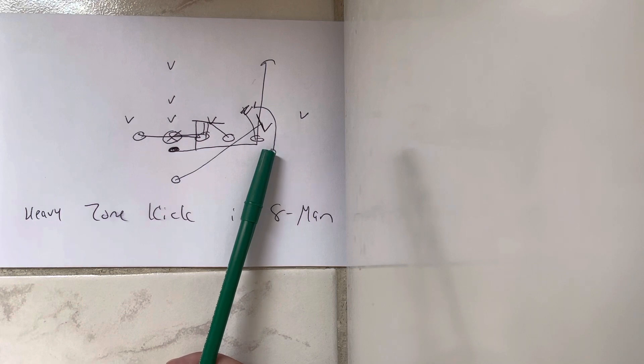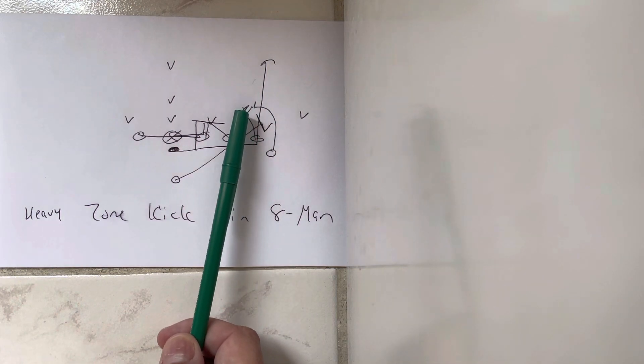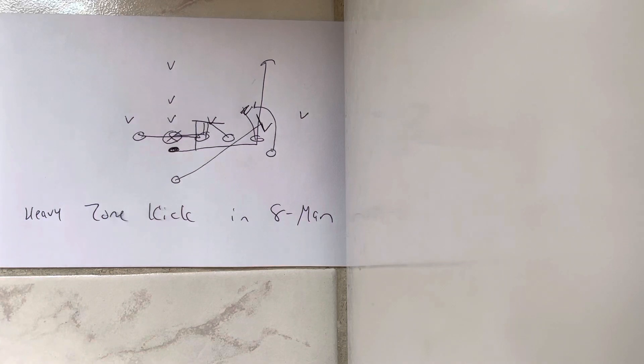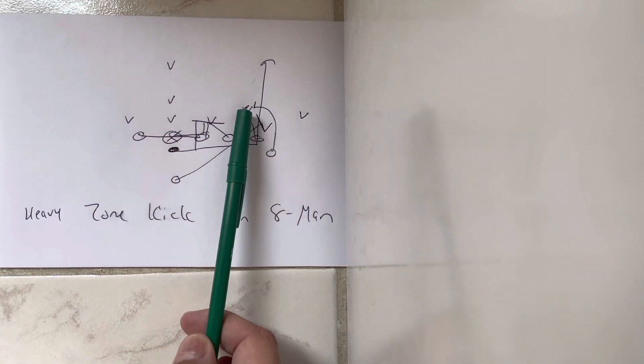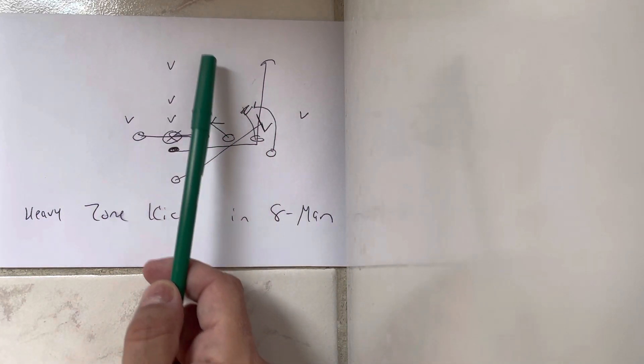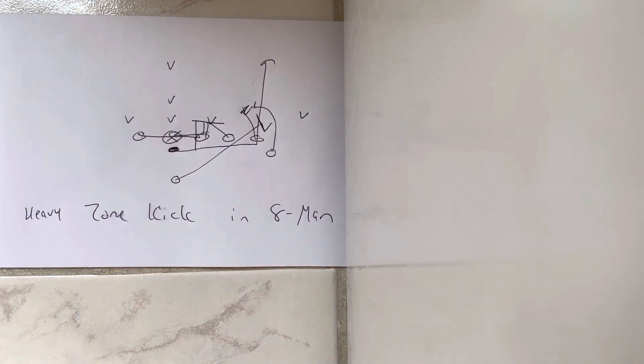The A back is going to wall off the nearest inside backer. If he's secured, he can go to the next level. Same thing if this backer runs over the top of the end, he can go to the next level. Or if the mic starts running, he can secure the mic.